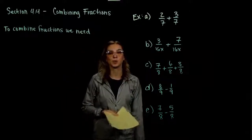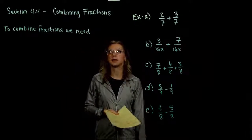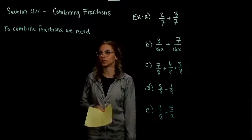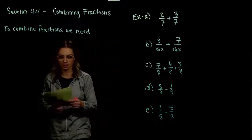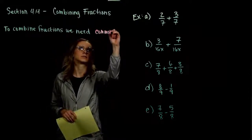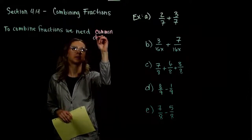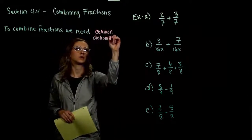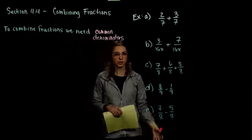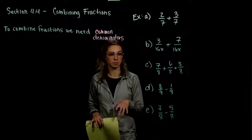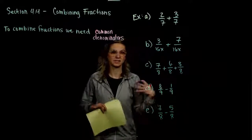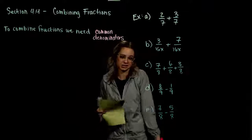Starting off with section 4.4, we're going to be combining fractions together. What do we need in order to combine any fractions together? We have to have common denominators. And if we don't have common denominators, we need to make them common. But the first case we're going to start with is if we do have common denominators, because it's the easiest.